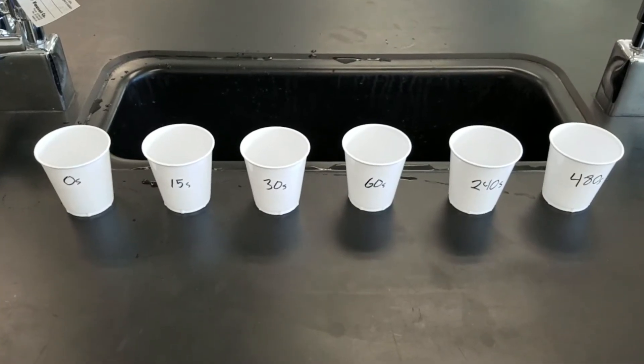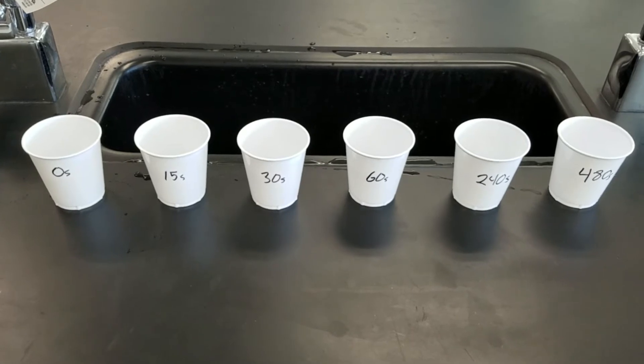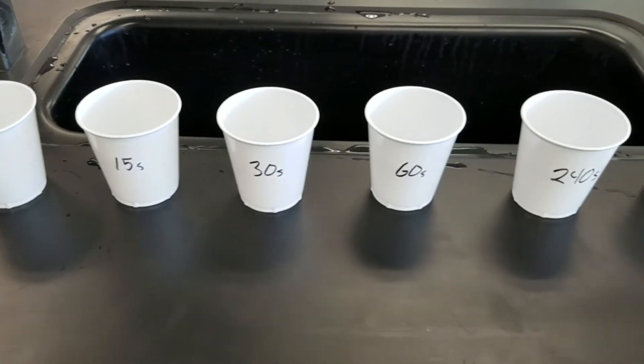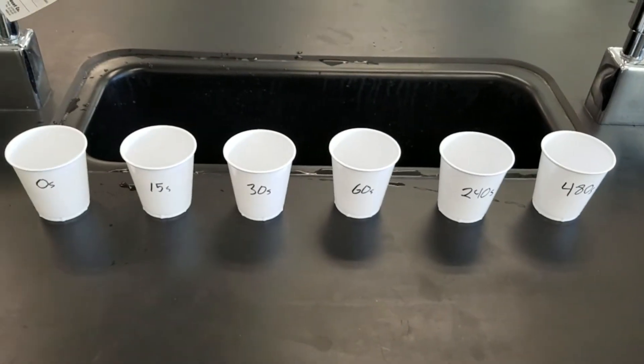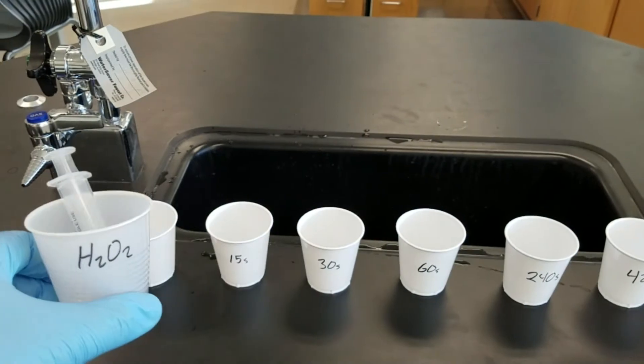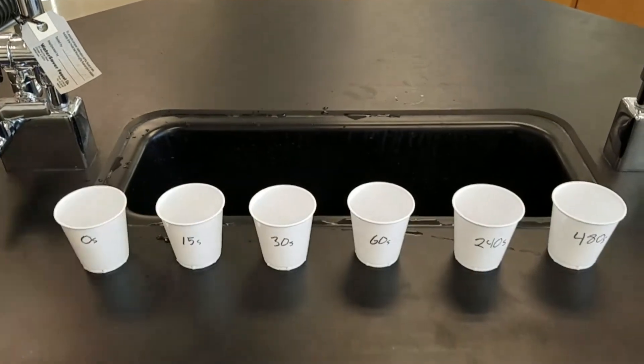When you're ready to start this lab, make sure you take the six cups with the number of seconds written on the side and arrange them chronologically just as I have done on the table so it's easier to work with. Each cup to start is going to get 10 milliliters of hydrogen peroxide.